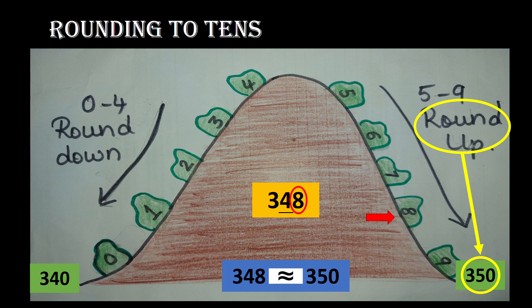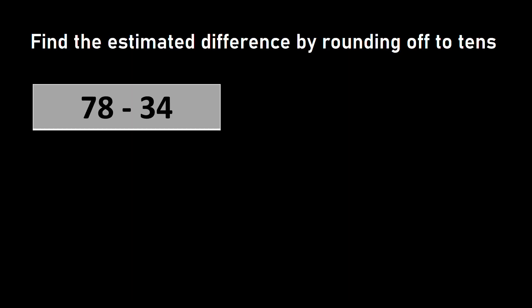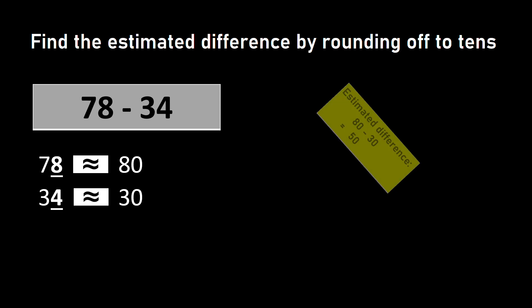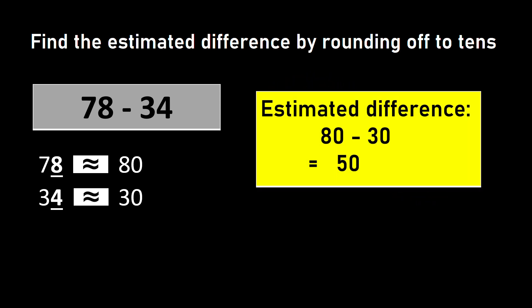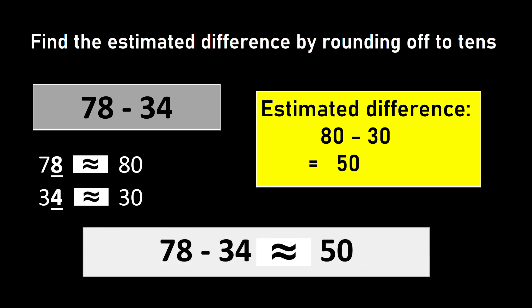Let us start to find the estimated difference. Here I have 78 minus 34. In the number 78, I have 8 in ones place, so it should be rounded up — 78 will be rounded as 80. And in the number 34, I have 4 in ones place, so it will be rounded down as 30. So the estimated difference will be 80 minus 30, which is equal to 50. Hence I say 78 minus 34 is approximately equal to 50.